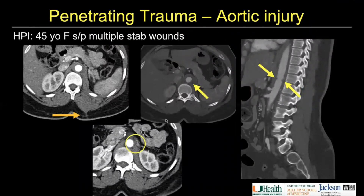Another patient with a penetrating injury, a stab wound in the left back: the trajectory goes through the retroperitoneum towards the abdominal aorta. There is irregularity from intimal flaps of the abdominal aorta and periaortic hematoma in this patient that was treated with endovascular repair.